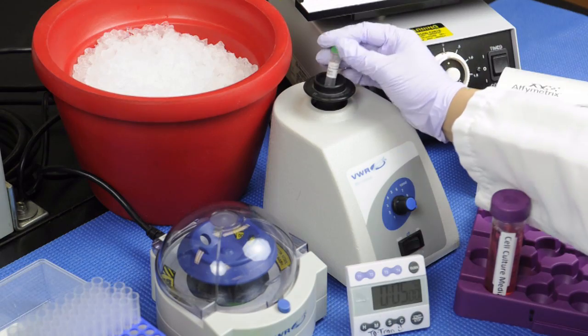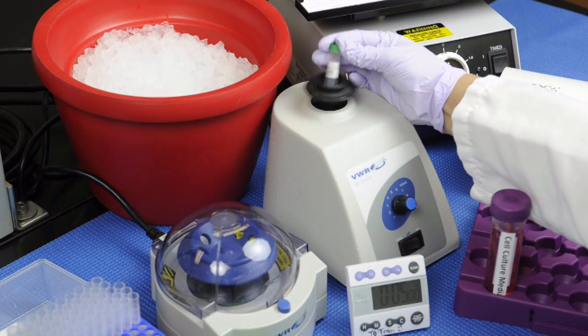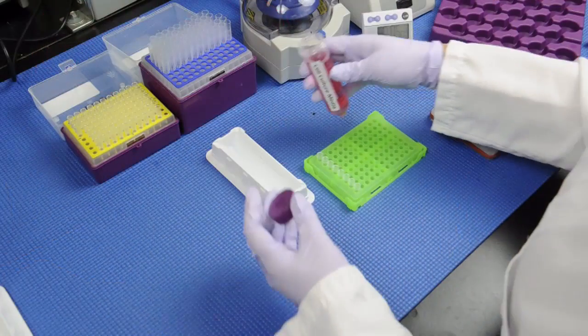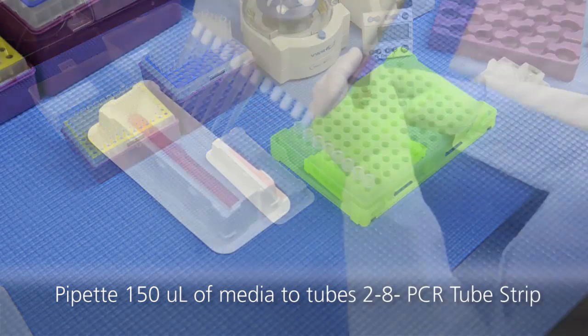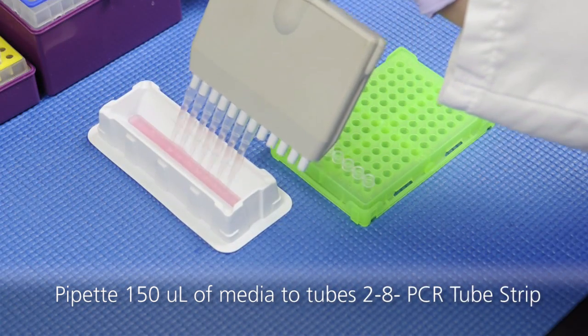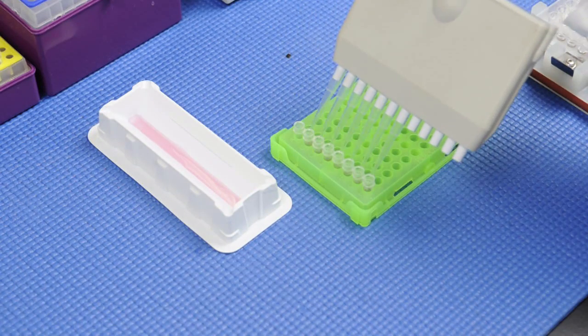After incubation, gently vortex the vial and place on ice. Using a reservoir and multi-channel pipet, add 150 microliters of media to tubes 2-8 of the PCR tube strip.